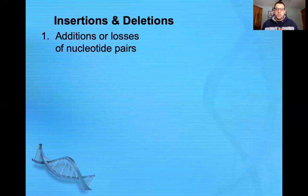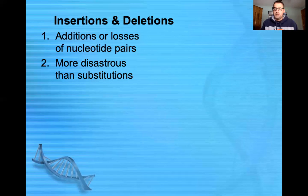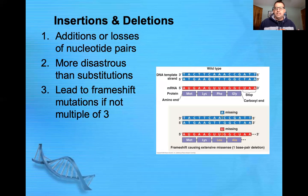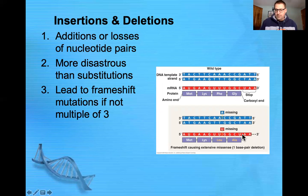We can also have mutations that are insertions or deletions, where base pairs are added or lost. It could be a single base pair or multiple base pairs inserted or deleted. These are typically more disastrous than substitutions because they lead to what are called frameshift mutations, if they aren't in multiples of three. If we delete one U, the amino acids shift and we get different amino acids throughout the rest of the sequence, because we've shifted the reading frame of which three bases are being read.